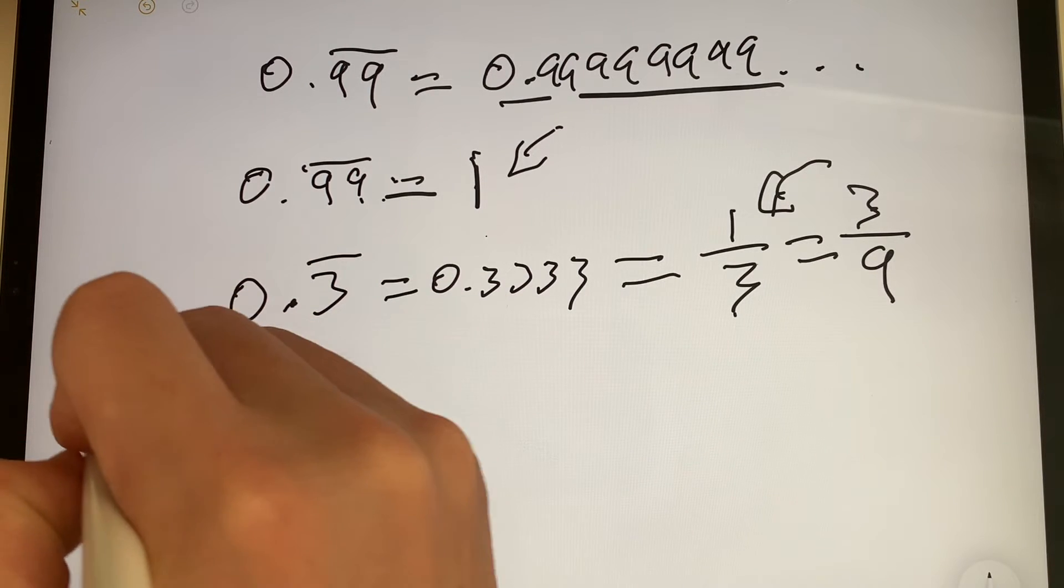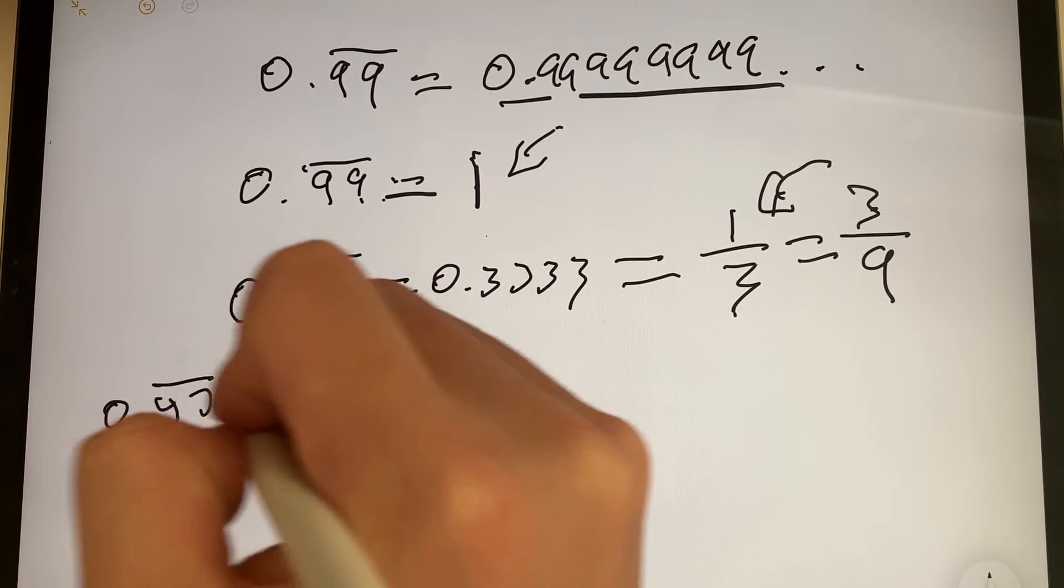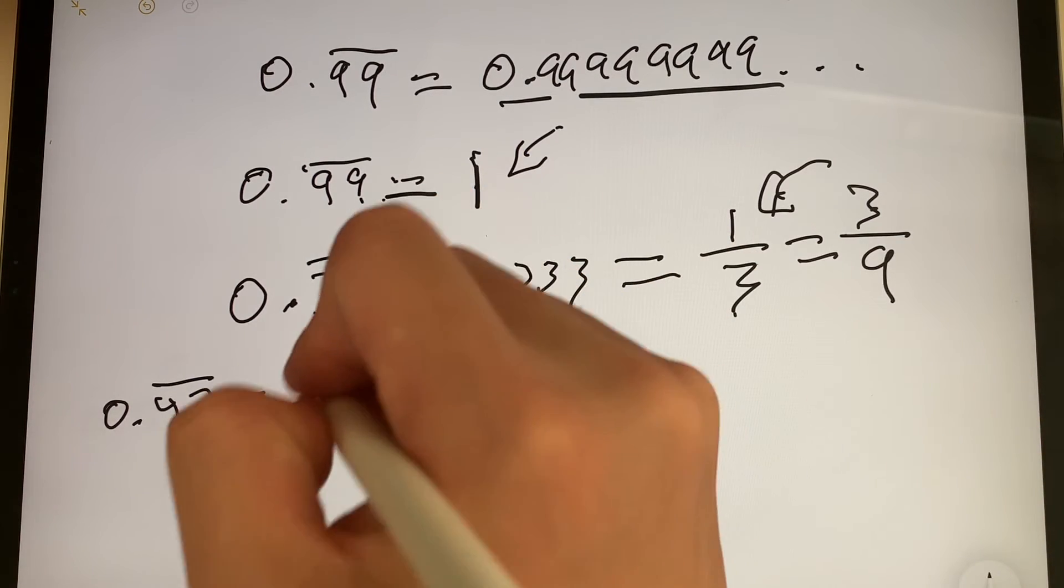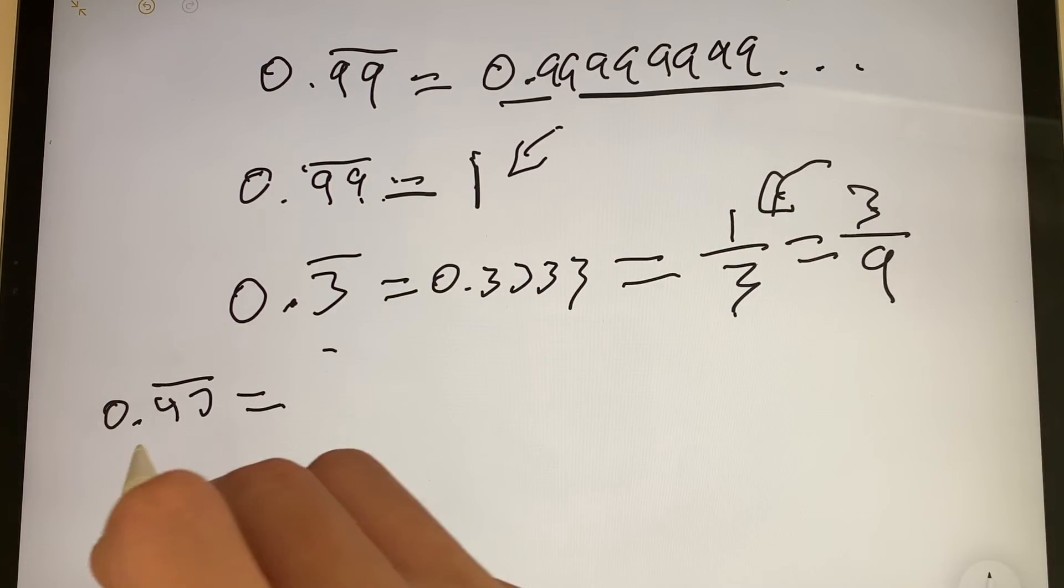So let's just use the example 0.47 repeating. All you have to do to convert 0.47 repeating to a fraction is you put it over 99. Put all the repeating decimals under 99.